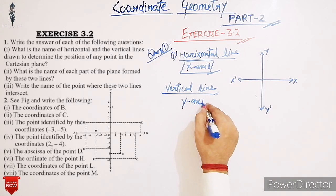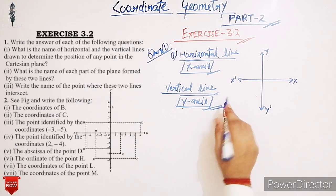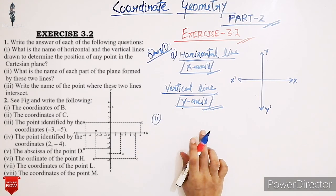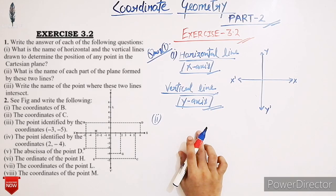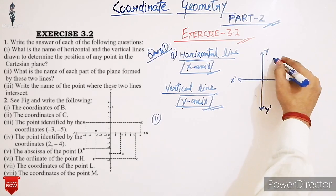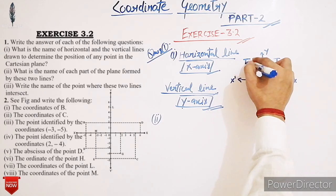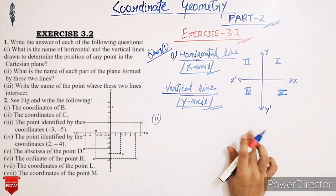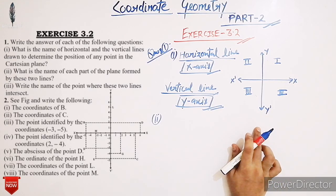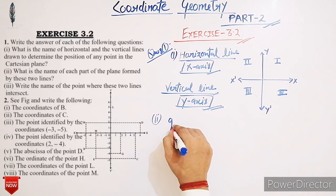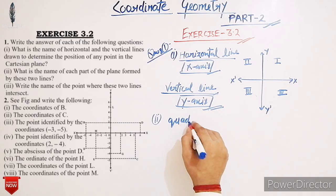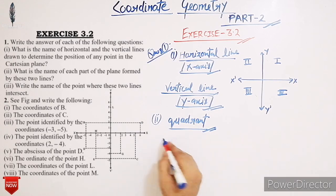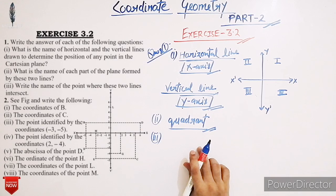Now next: what is the name of each part of the plane formed by these two lines? Students, you know very well that the coordinate axes divide the plane into four parts — first, second, third, and fourth. These parts are called quadrants. So the name of each part of the plane formed by the x-axis and y-axis is called a quadrant.